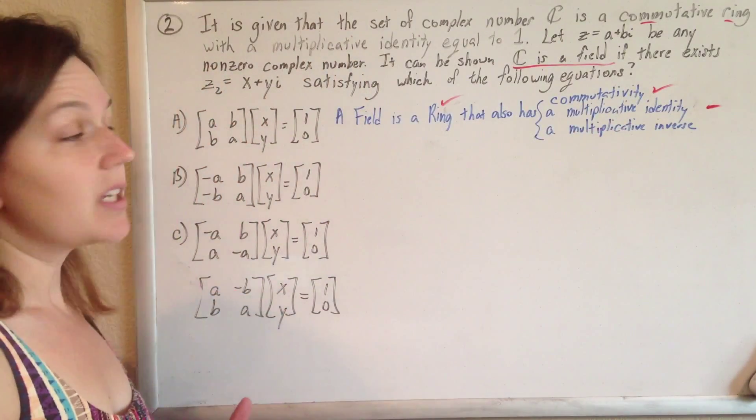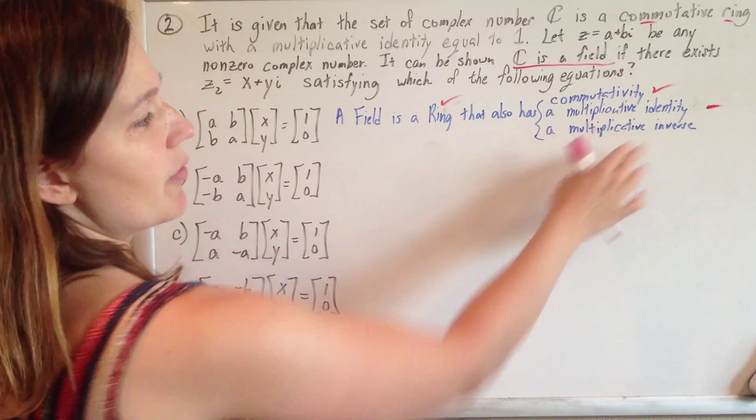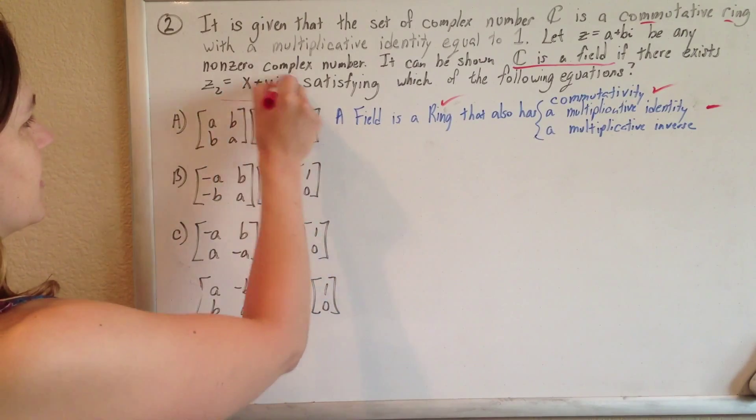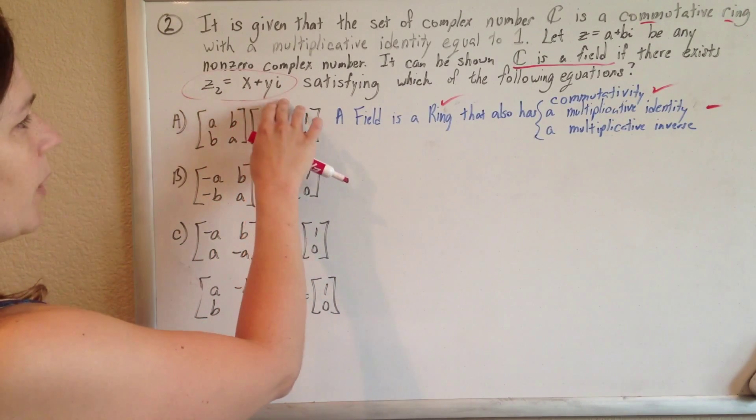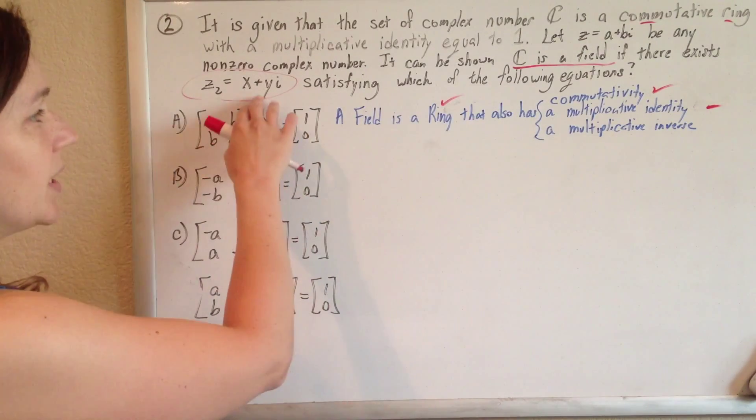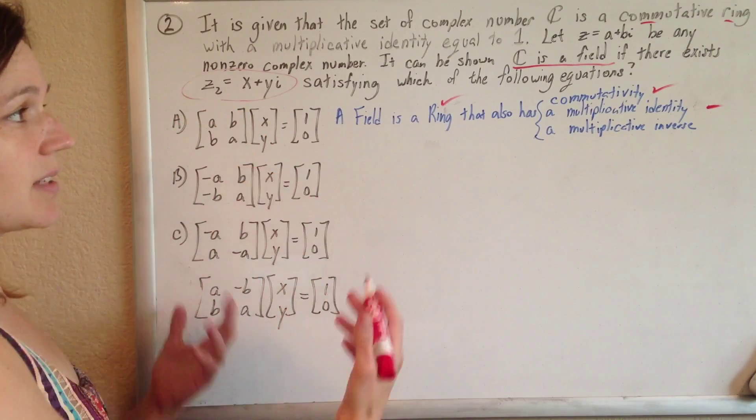So the only other qualification we need to prove that this thing is a field is it needs to have a multiplicative inverse. And so they're setting this z2 equals x plus yi to be your multiplicative inverse. So we need to show that z2 is the multiplicative inverse for this set.